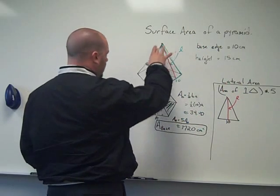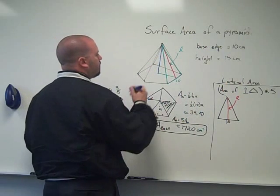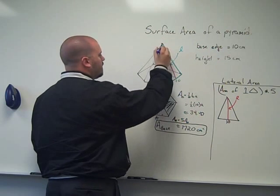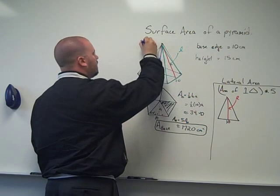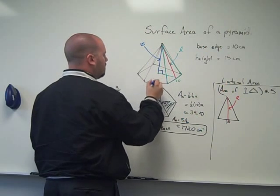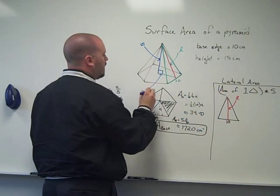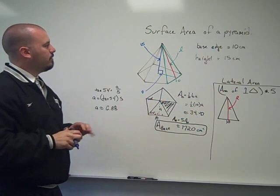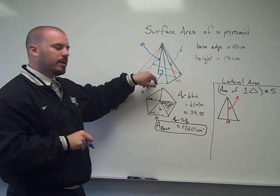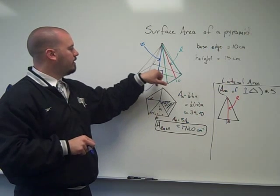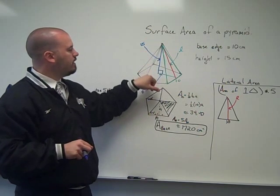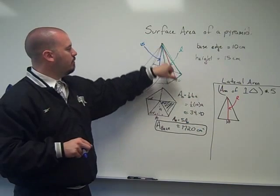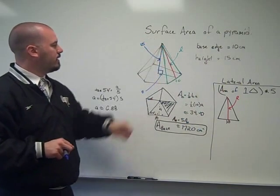If we look inside this picture here, it's kind of a little tricky to see, but the height of 15, the apothem, and the slant height form a right triangle. Remember, height is always perpendicular to the base, and then the apothem is here, we're hitting the height, and that would be the hypotenuse of the triangle, the slant height.